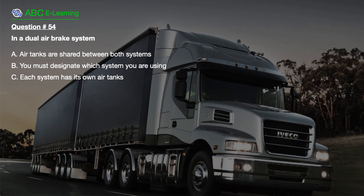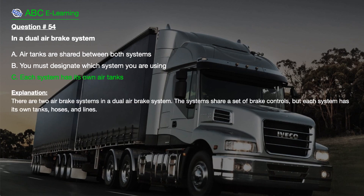Question number 54. In a dual air brake system: A. Air tanks are shared between both systems. B. You must designate which system you are using. C. Each system has its own air tanks. The correct answer is C. Each system has its own air tanks. Explanation: There are two air brake systems in a dual air brake system. The systems share a set of brake controls, but each system has its own tanks, hoses, and lines.